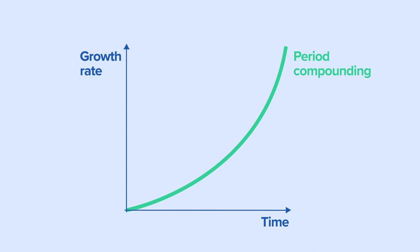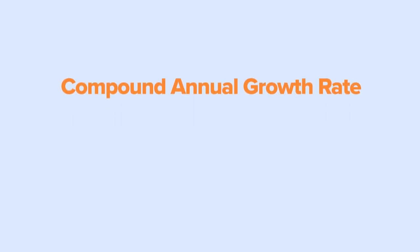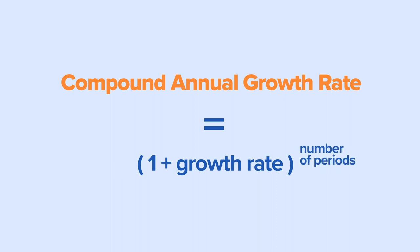Instead of growing by a fixed or constant amount, compounding grows at a percentage of the previous level during each period. This is commonly referred to as the compound annual growth rate, or CAGR. The fundamental compounding equation in finance is one plus the rate of growth each period, raised to the number of compounding periods.